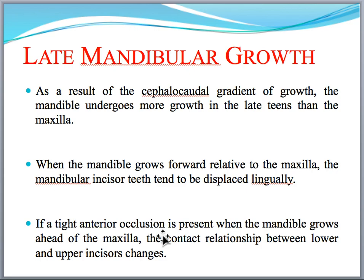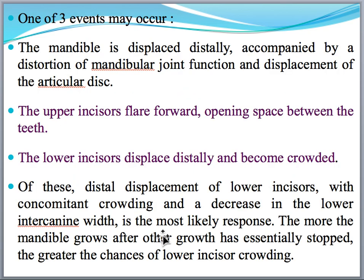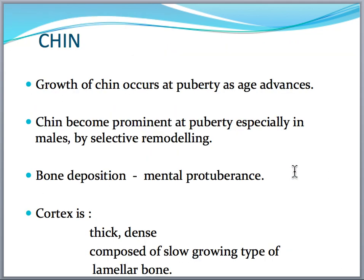Next comes late mandibular growth. When postnatal growth and development of the mandible alone is asked, explain changes in every part of the mandible after birth. Include articles regarding late mandibular growth — what it means especially compared to the maxilla. Due to the cephalocaudal gradient, the mandible grows at puberty age later than the maxilla; maxillary growth restricts first and mandibular growth completes later. Majority of articles report that crowding is mainly because of late mandibular growth. Three events may occur: upper incisors may flare forward, spaces between maxillary teeth may open, and lower incisors may distally displace.